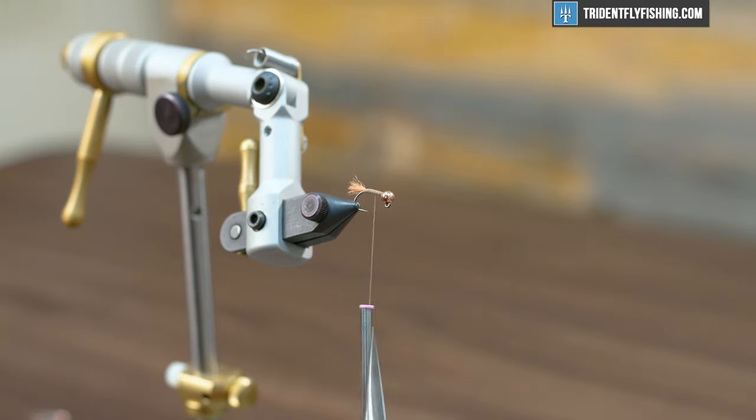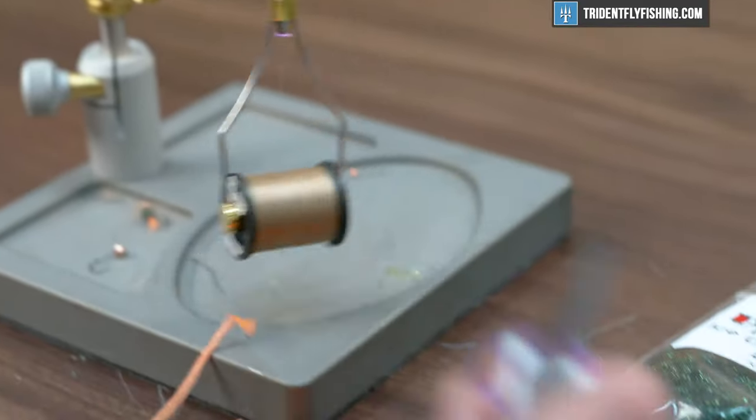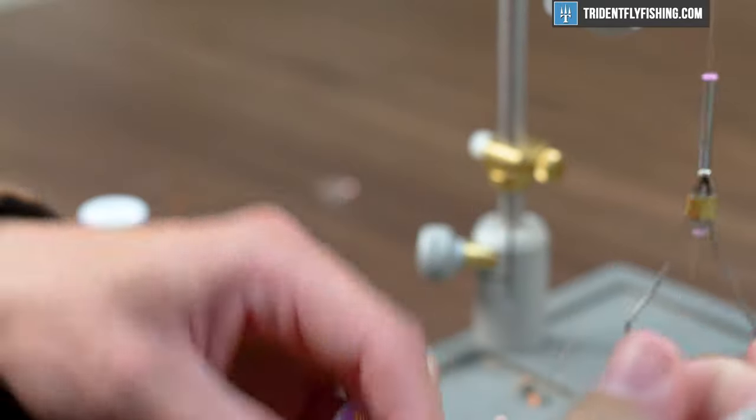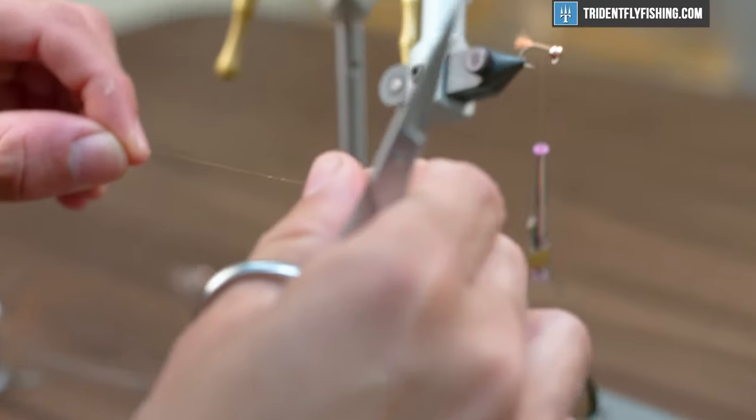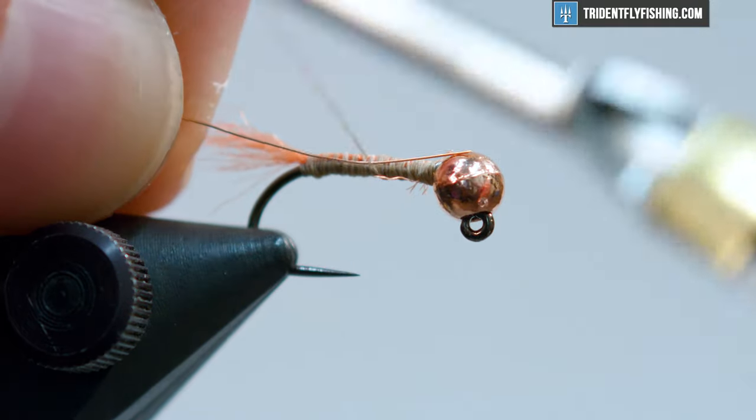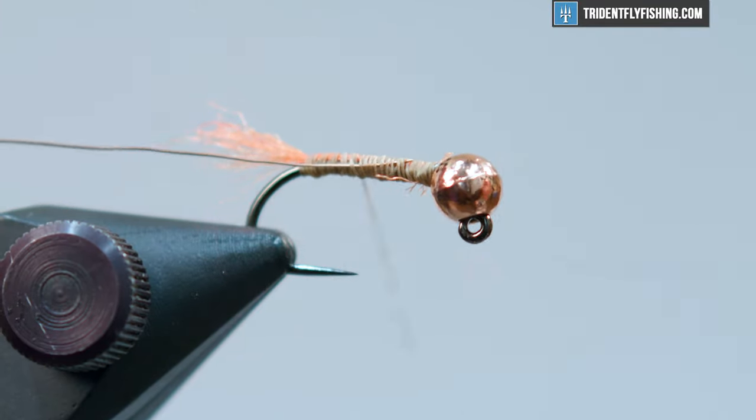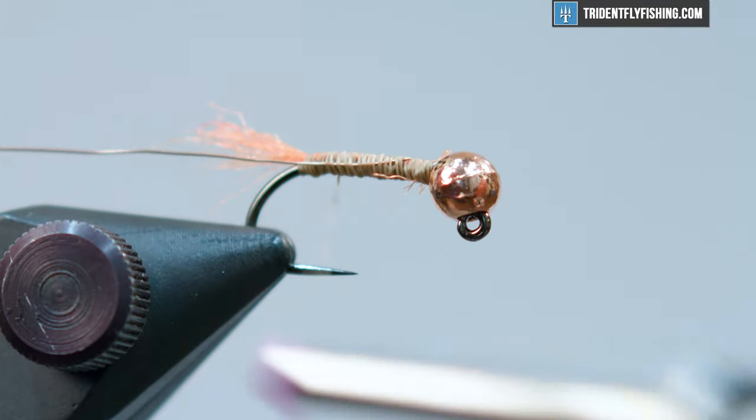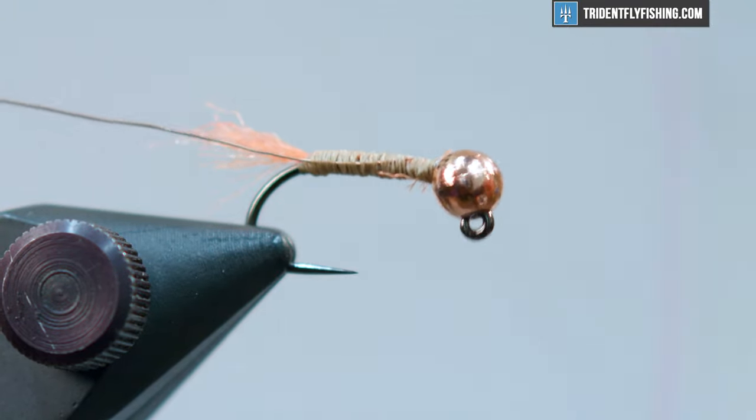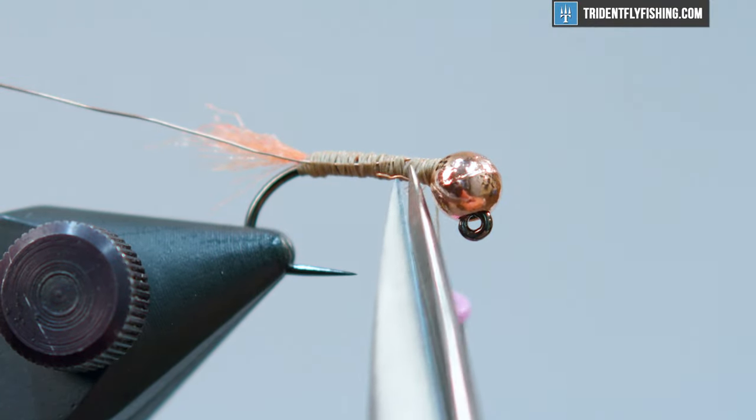We'll bring our thread about mid shank and we're going to move into some copper wire. It's ultra wire, size small. Get yourself off a few inches and we'll tie that in right in the middle and we'll wrap it on up and then wrap it back.